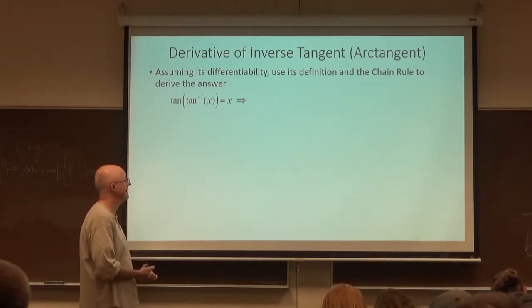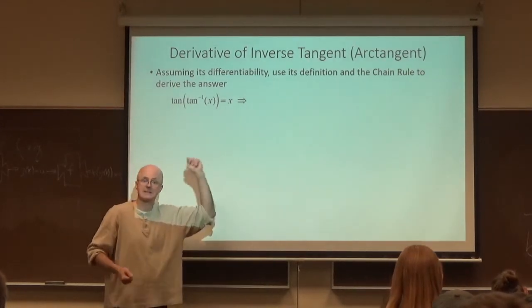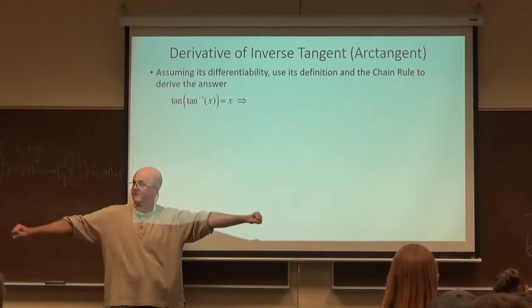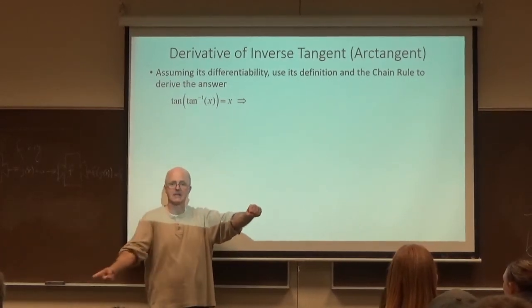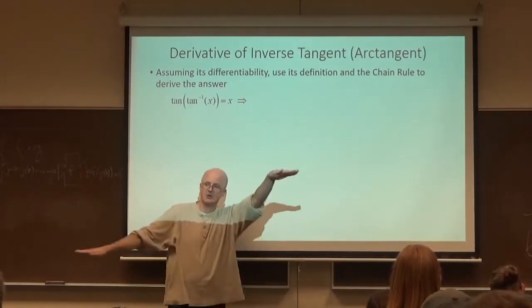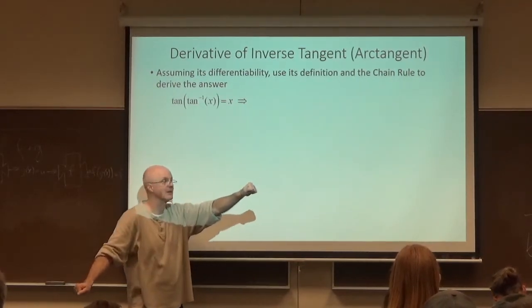This is actually true for all x. Any real number x, this is true. The domain of the inverse tangent function is the entire real number line. You may remember its graph. It will look like this. It's got two distinct different horizontal asymptotes. It's plus or minus pi over 2. It ends up.